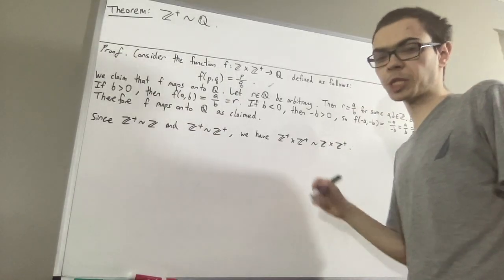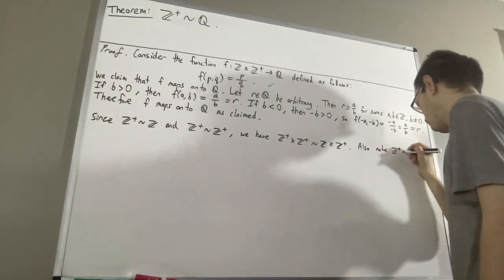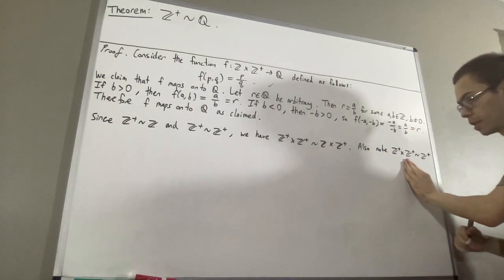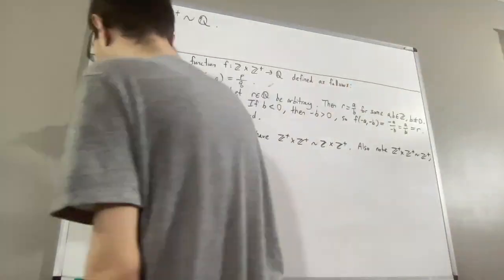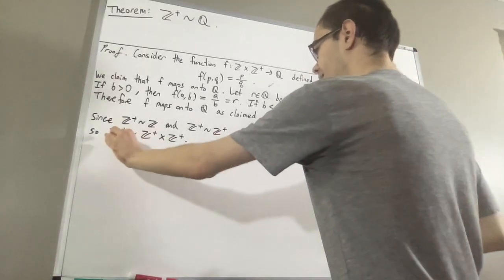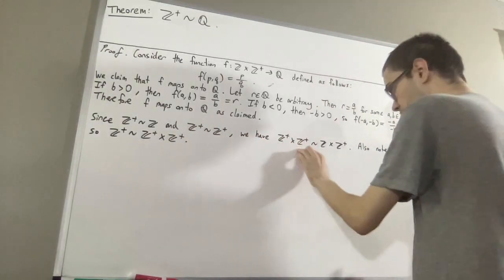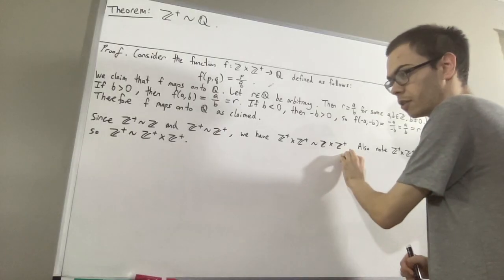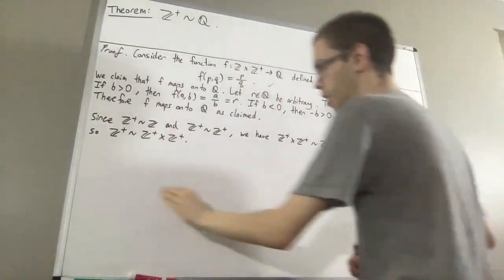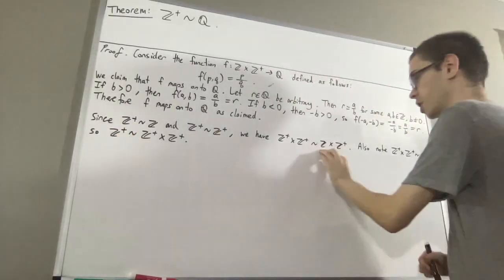We also know there is a bijection from ℤ⁺×ℤ⁺ to ℤ⁺. Flipping that around, since a bijection from A to B gives a bijection from B to A, there is a bijection from ℤ⁺ to ℤ⁺×ℤ⁺. Composing: there is a bijection from ℤ⁺ to ℤ⁺×ℤ⁺, and a bijection from ℤ⁺×ℤ⁺ to ℤ×ℤ⁺, so by transitivity there is a bijection from ℤ⁺ to ℤ×ℤ⁺.